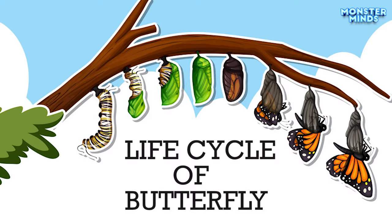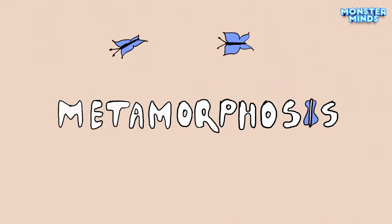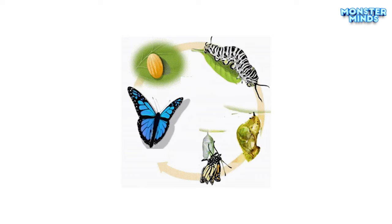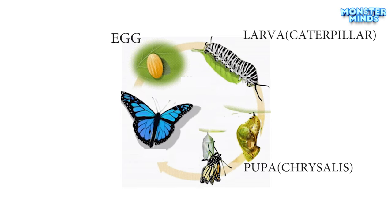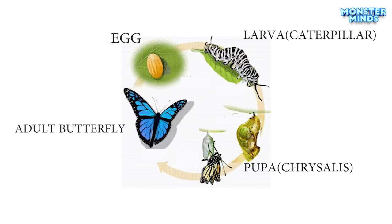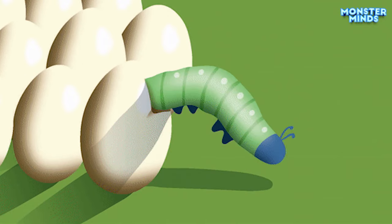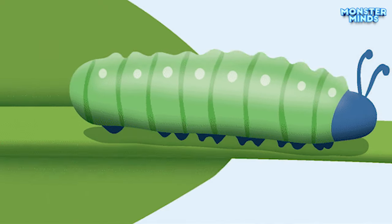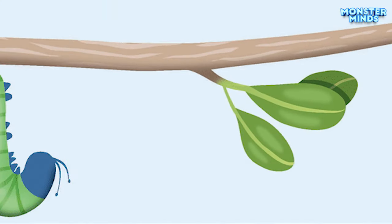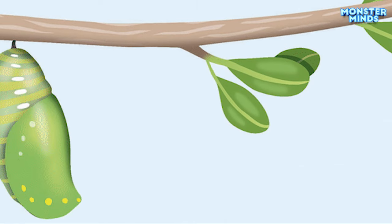Let's learn about the life cycle of a butterfly. The life cycle of a butterfly, also known as metamorphosis, consists of four distinct stages: egg, larva, pupa, chrysalis, and adult butterfly. This transformation is a remarkable process that allows the butterfly to change both in form and function as it progresses through these stages.